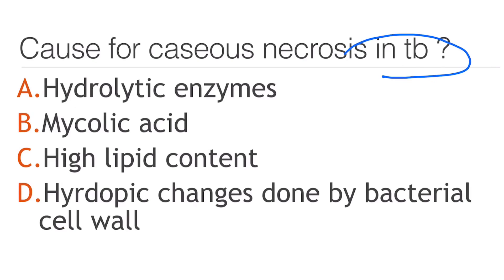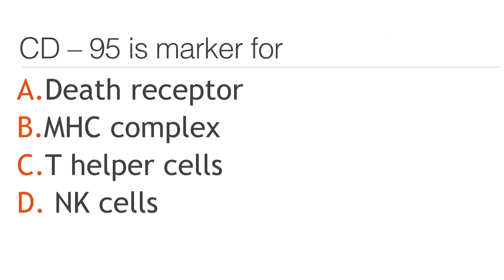The cause of caseous necrosis in TB is hydrolytic enzymes, mycolic acid, high lipid content, or changes done by the bacterial cell wall? The answer is mycolic acid. CD95 is a marker for: death receptor, MHC complex, T helper cells, or NK cells? It is a marker for the death receptor.